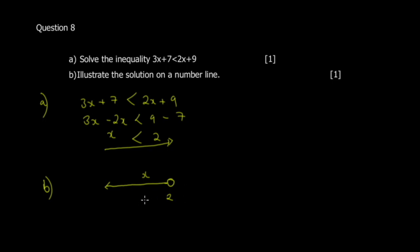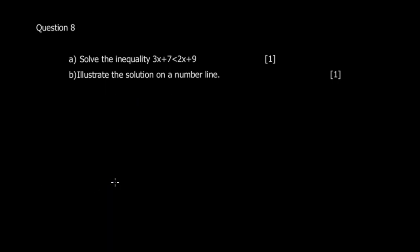The second part says illustrate the solution on a number line. For x less than 2, since it is a strict inequality we use a hollow circle at 2. Then draw an arrow going to the left, showing all values less than 2. That is how you illustrate this on a number line.